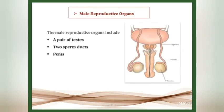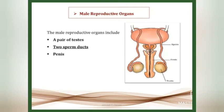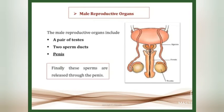The male reproductive organs of a human include a pair of testes, two sperm ducts — also called vas deferens — and a penis. The testes produce the male gamete called sperm cells. Millions of sperms are produced by the testes. These sperms are transferred through the sperm ducts, also called vas deferens, and released through the penis.